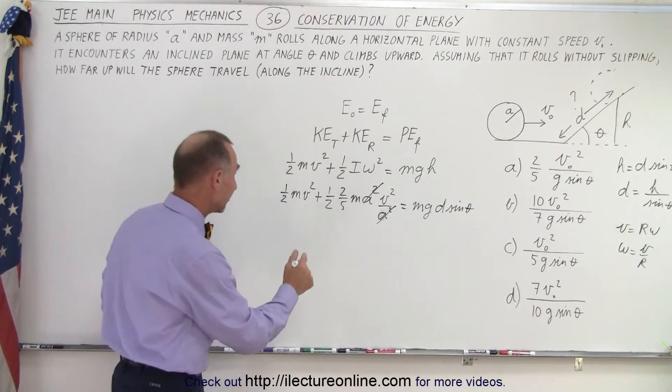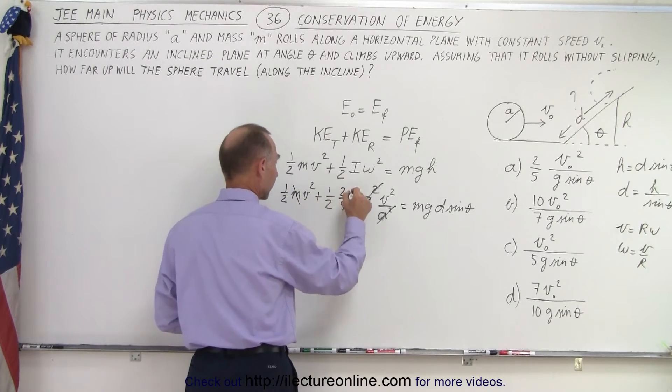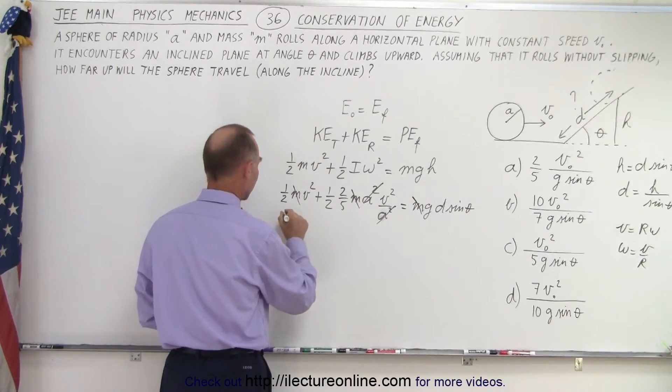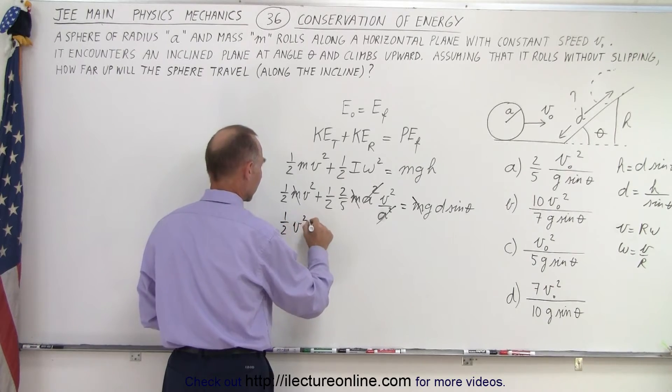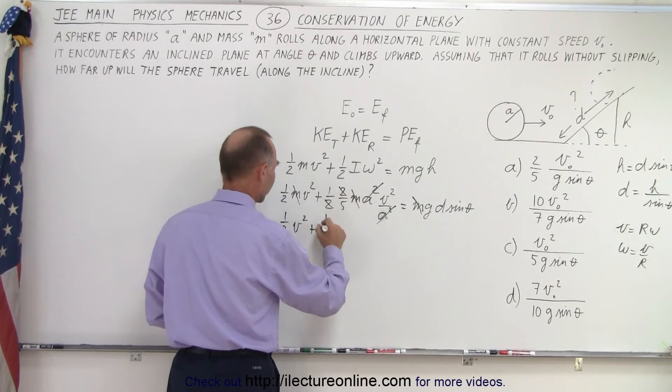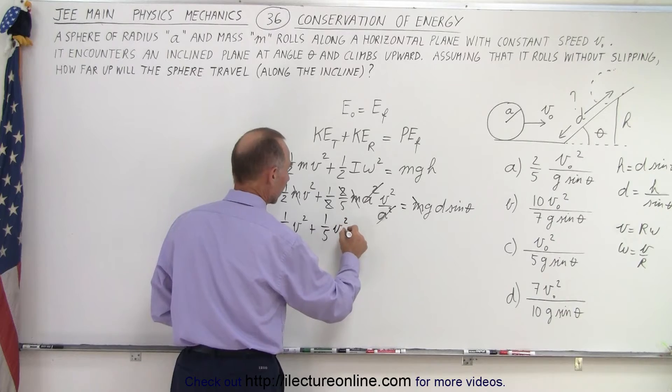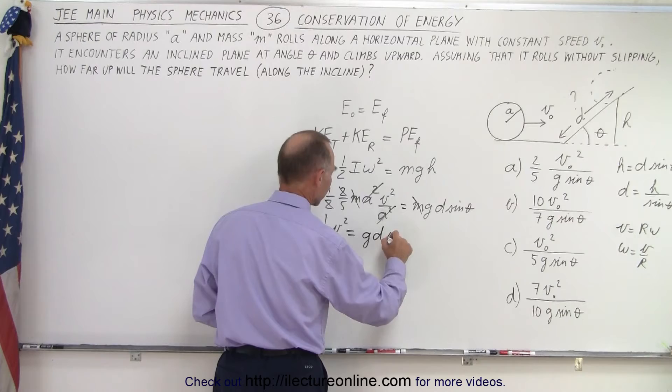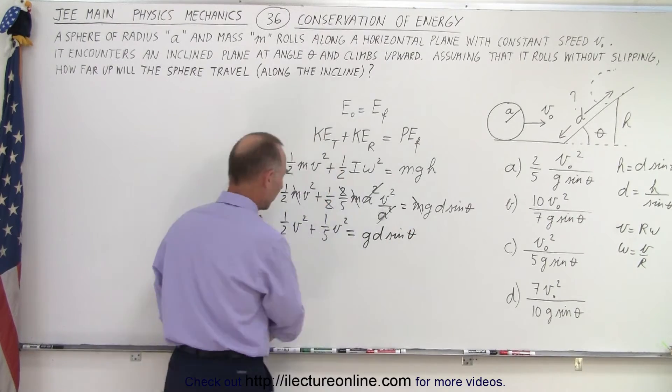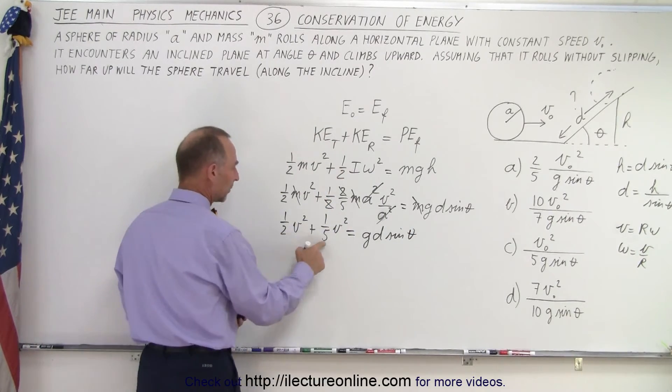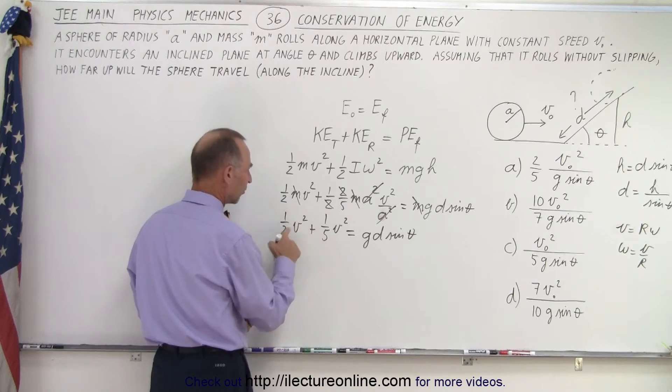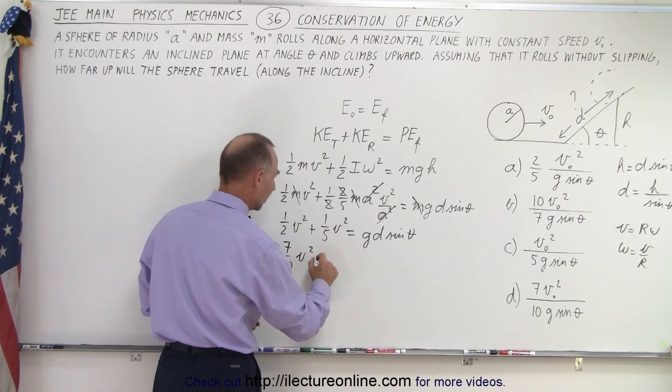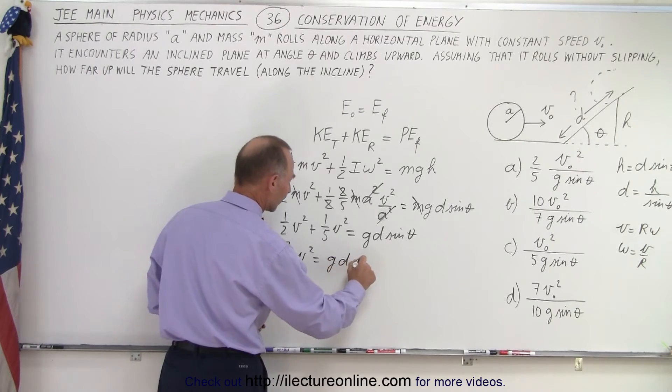And now we have 1/2 v squared, plus the 2's cancel out, 1/5 v squared, which is equal to gd sine theta. So on the left side, we can combine. The common denominator here is 10, so that's 5/10 plus 2/10, or 7/10 v squared, is equal to gd sine theta.